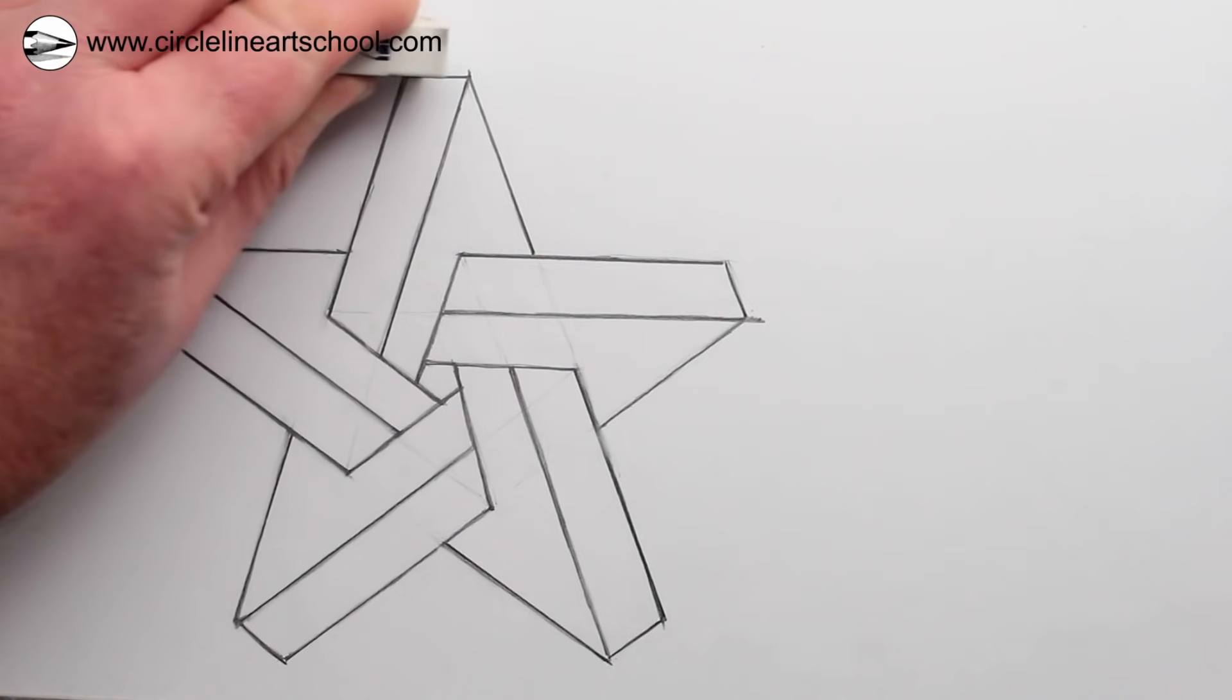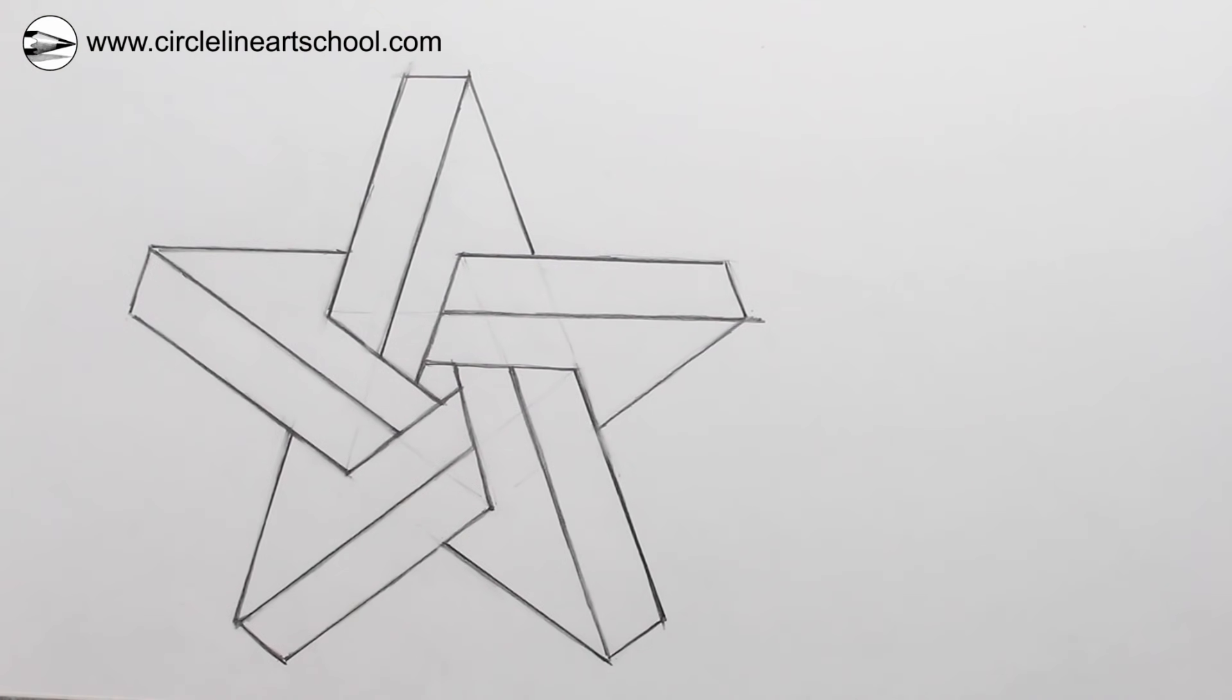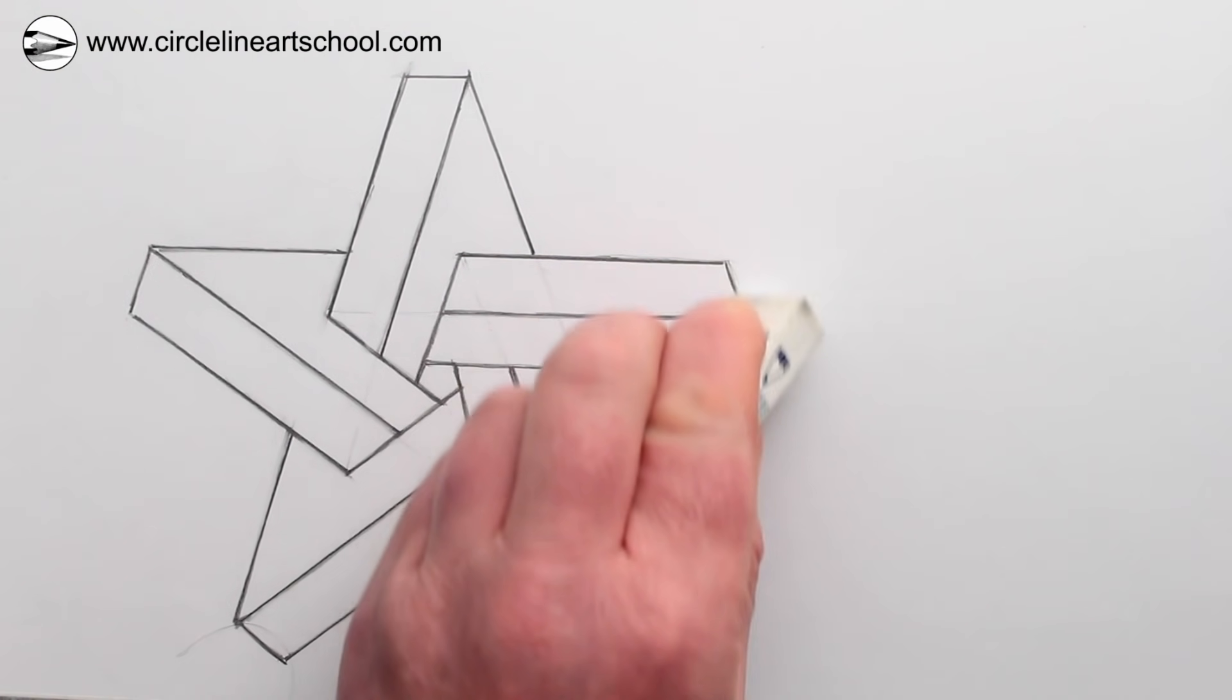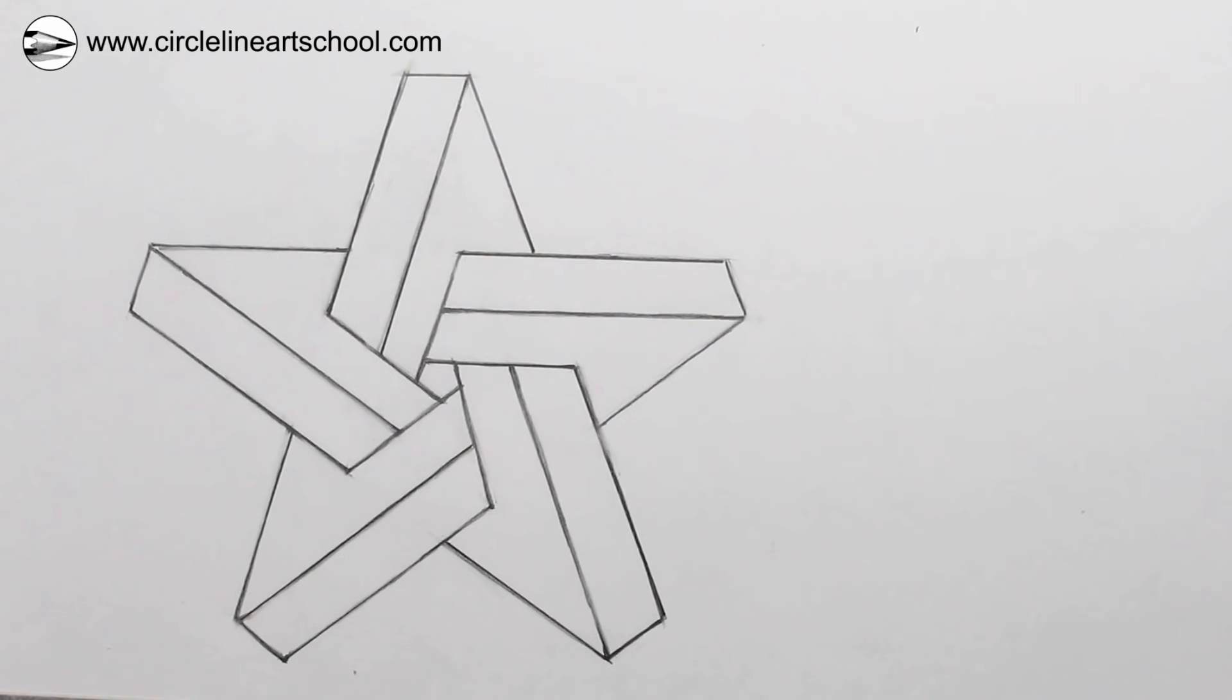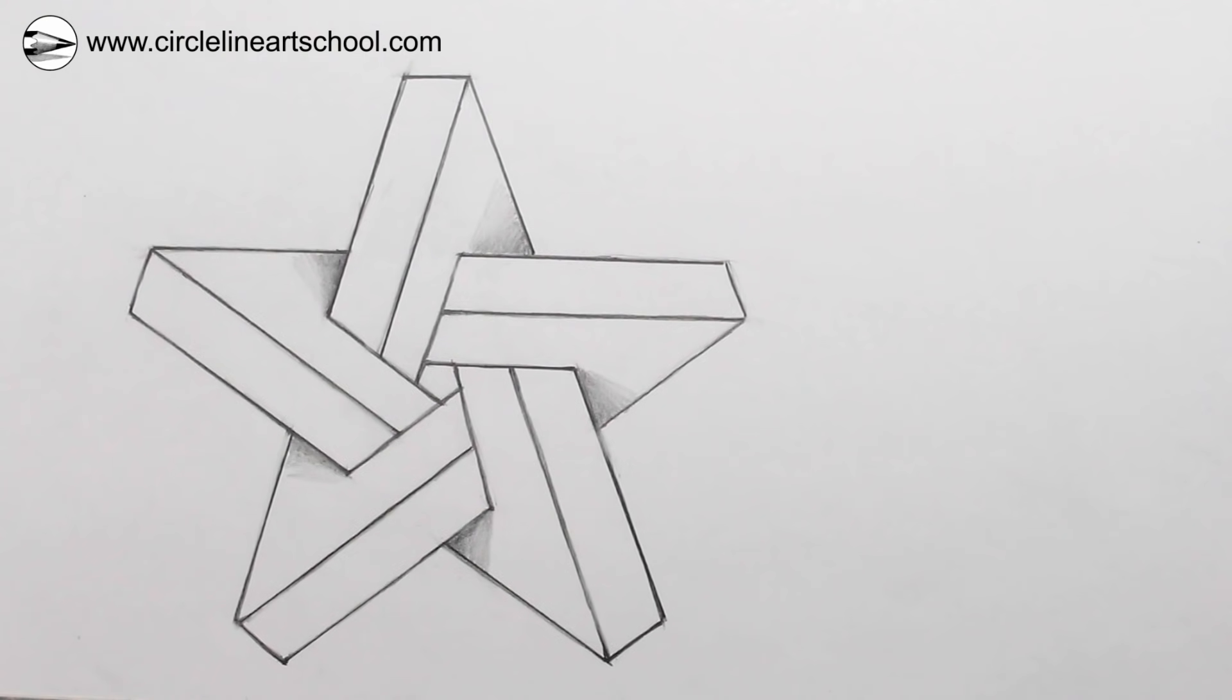So now we have the impossible star, a star that you could not make three dimensional, but by following some steps we can clearly draw it two-dimensional on a piece of paper.